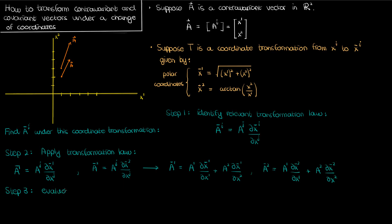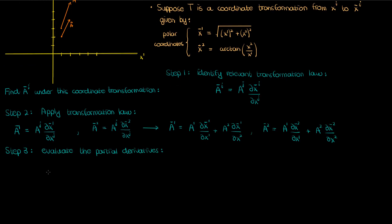The third step is to evaluate the partial derivatives corresponding to the tensor transformation equations, which we can easily do by going back and looking at the coordinate transformation equations written above. From the first coordinate transformation equation, we can see that the partial derivative of x super 1 bar with respect to x super 1 is the following. The power on the square root comes down and decreases by 1, so the square root goes in the denominator. Meanwhile we also have to differentiate the term inside with respect to x super 1, giving 2x super 1 in the numerator. Canceling the 2's gives us the result for this partial derivative.